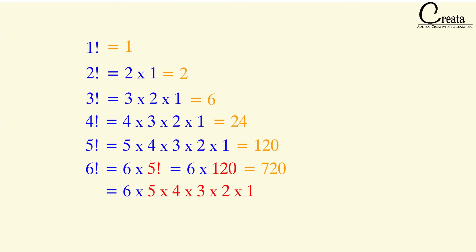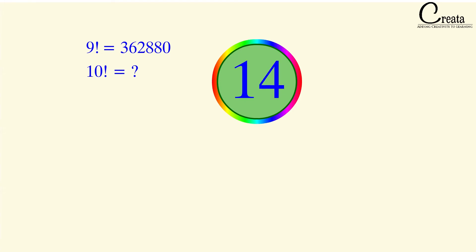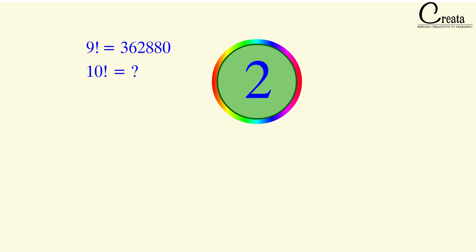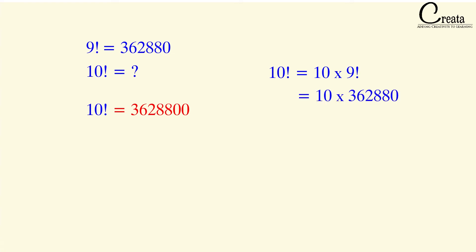Here is a quick question: the value of 9! is 362,880. Calculate 10! in 15 seconds. The answer is 3,628,800. We simply compute 10! = 10 × 9! = 10 × 362,880 = 3,628,800. Since 9! was given, we easily obtained 10!.